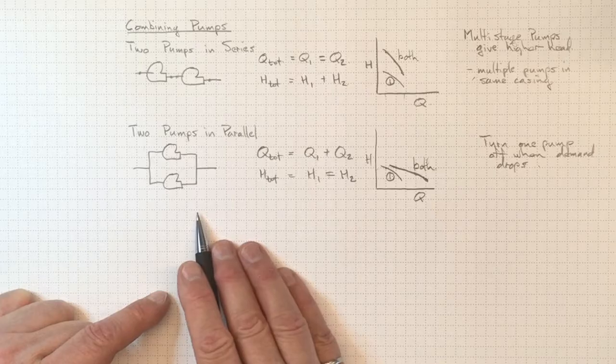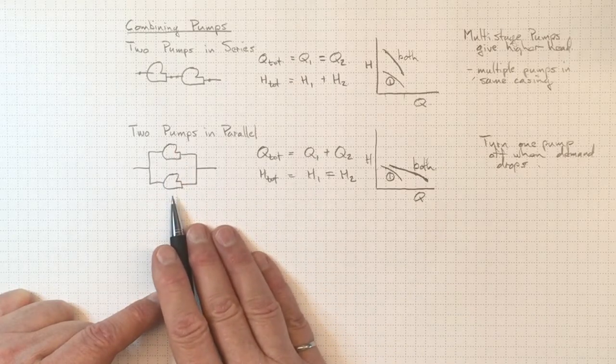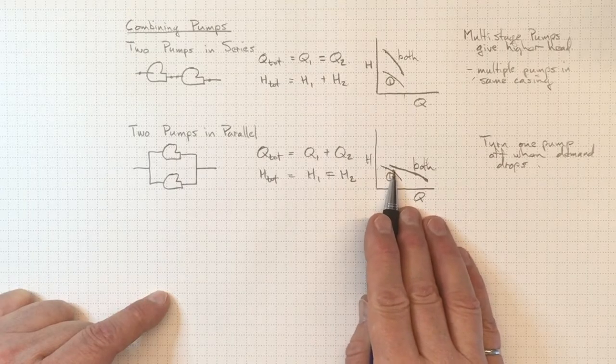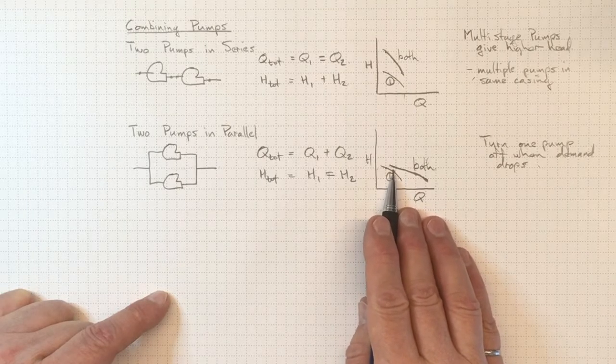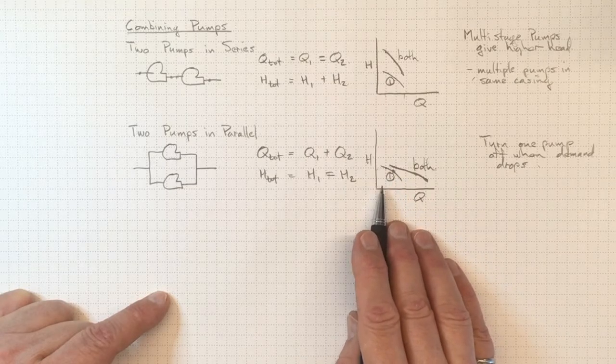We could have two in parallel, we could have three in parallel or more to allow us to manage our demand requirements while still staying and operating somewhere in the sweet spot here at the highest efficiency in the range of flows where the pump was designed to operate.